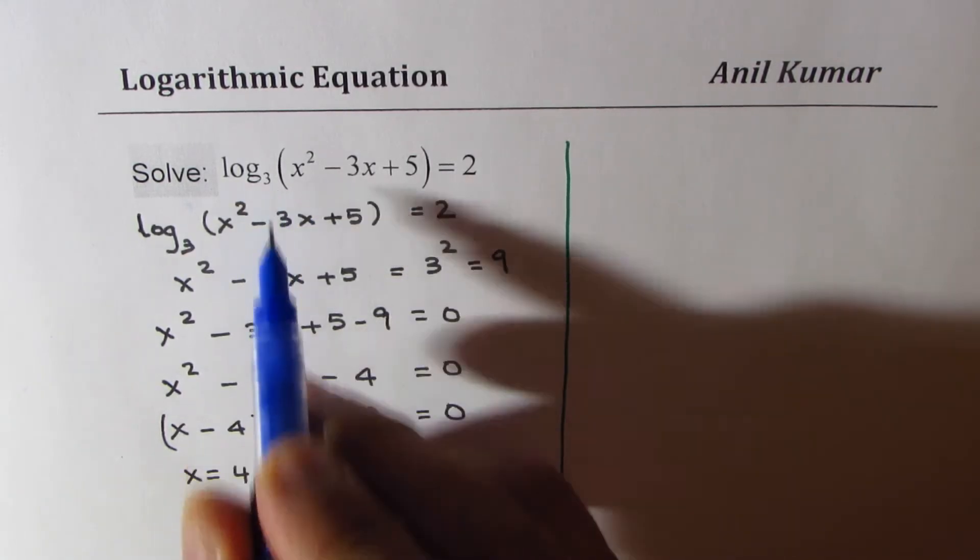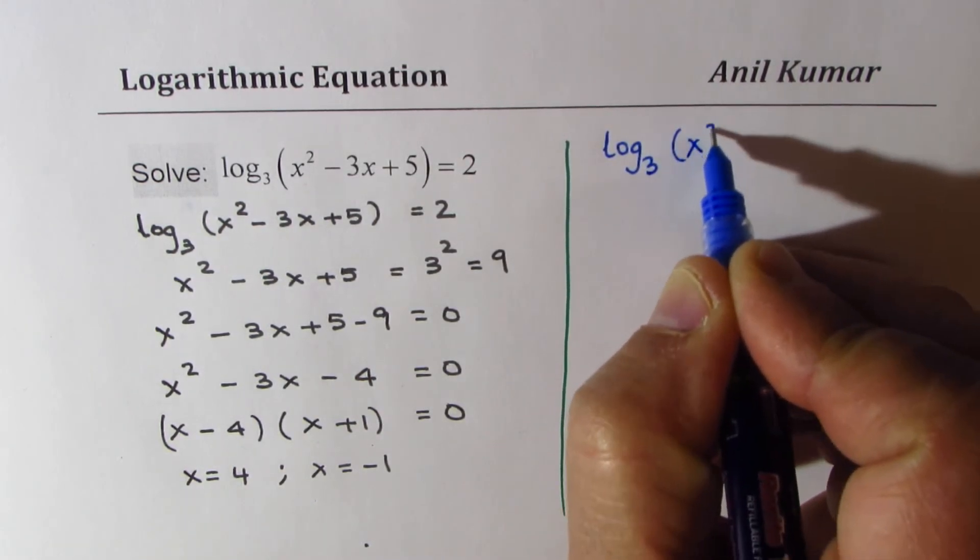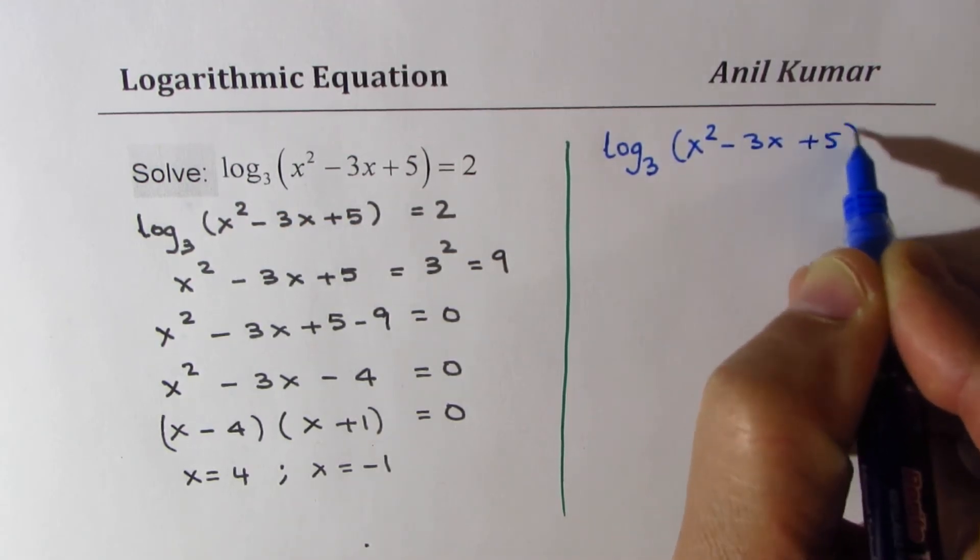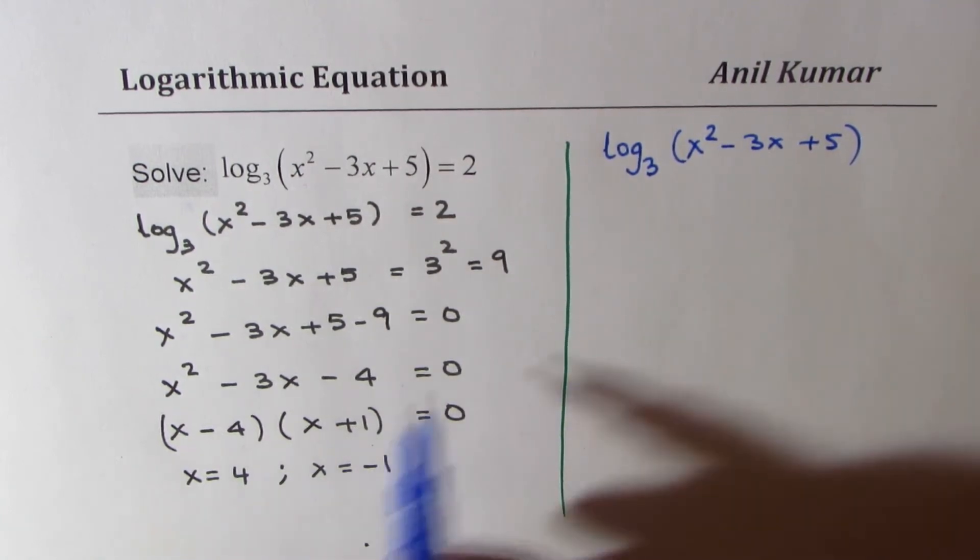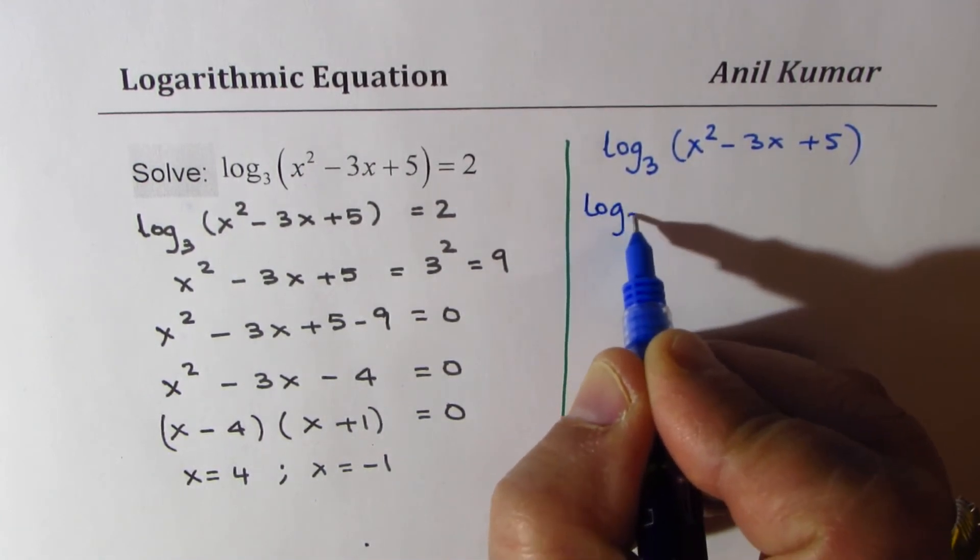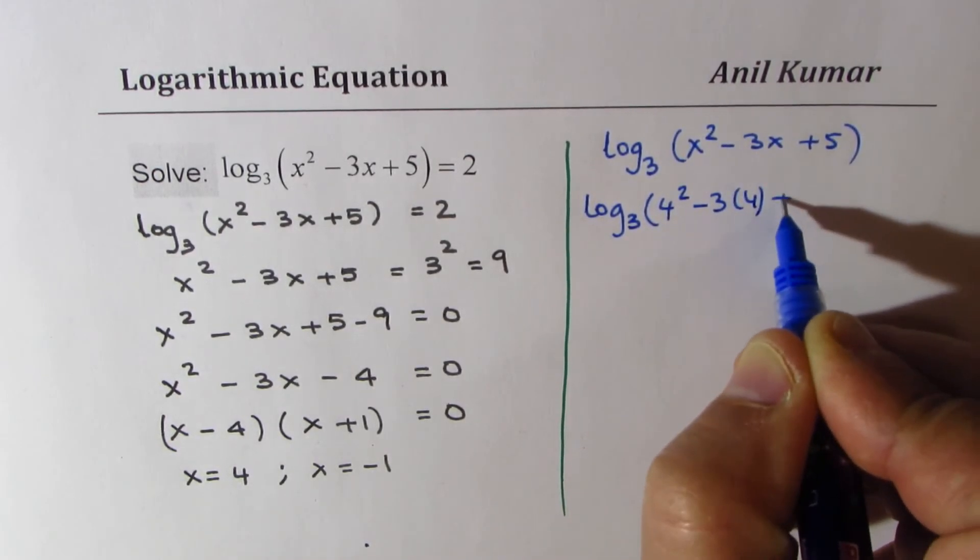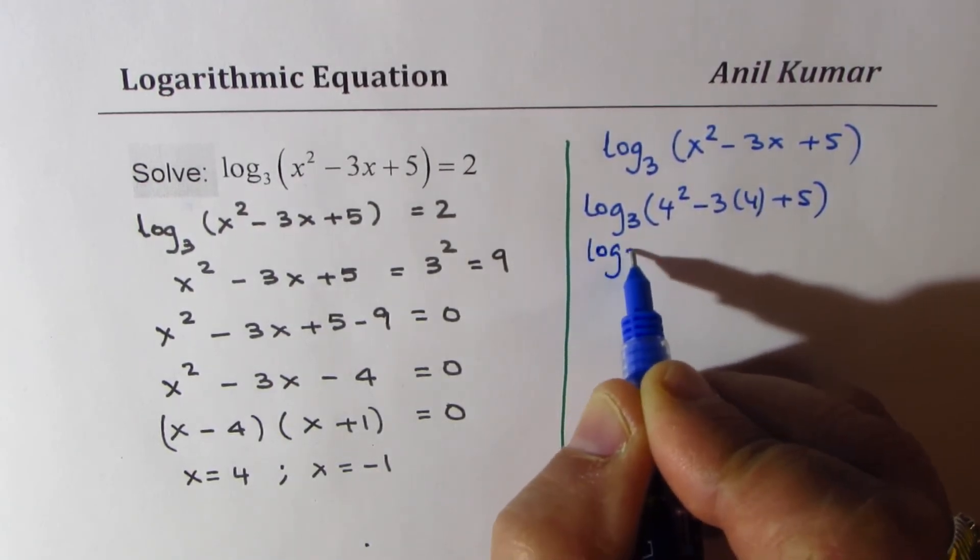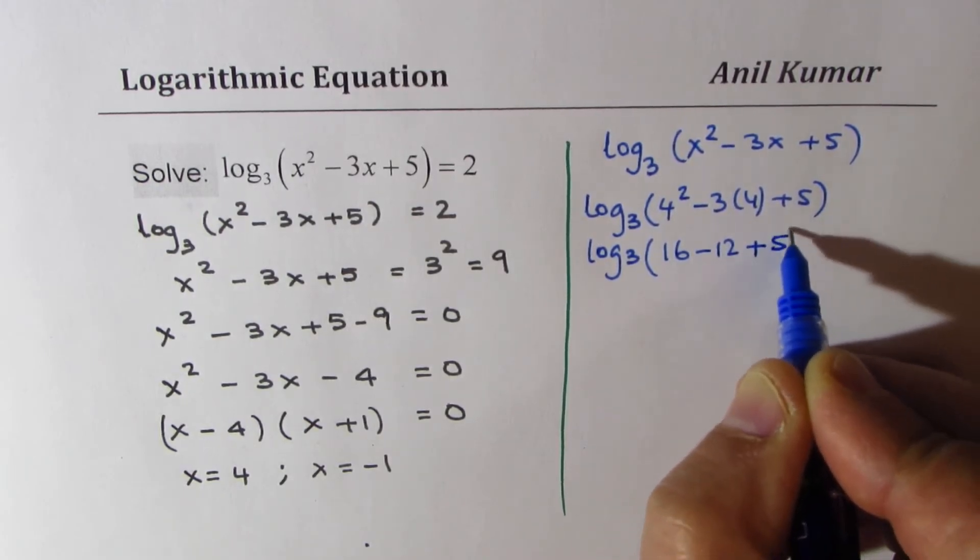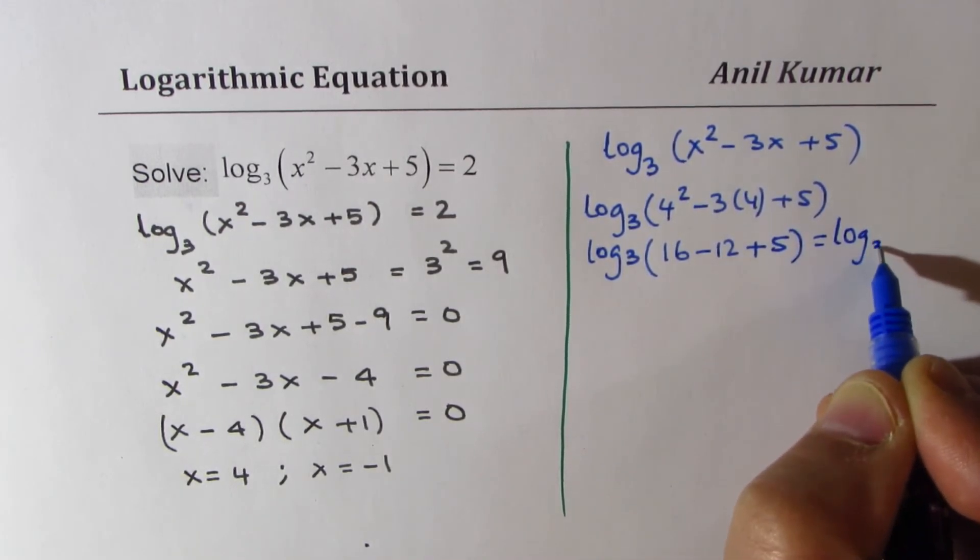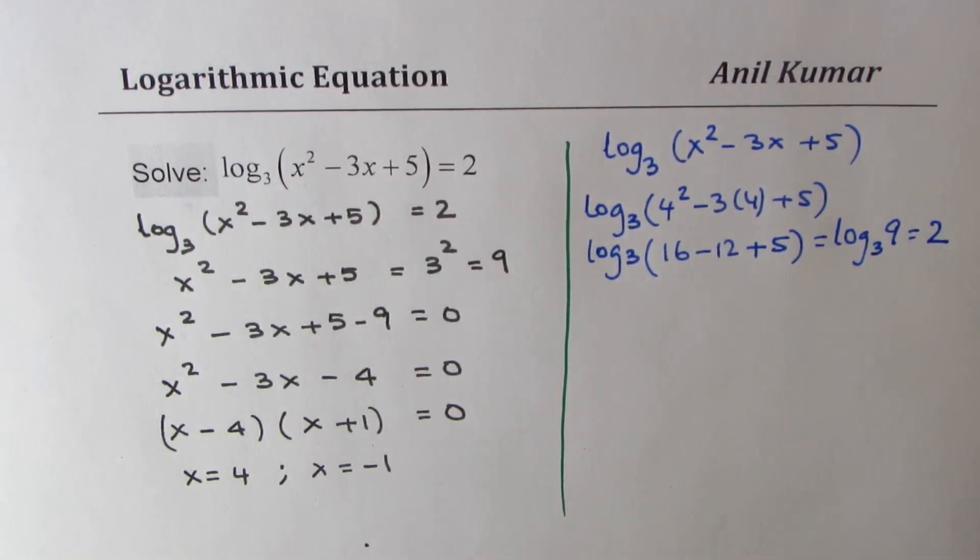If I substitute 4, we'll check the value of log₃(x² - 3x + 5). If I write 4 for x we get log₃(4² - 3(4) + 5) which is log₃(16 - 12 + 5) which is log₃(9) and which is indeed equal to 2. So it works, this is the right solution.